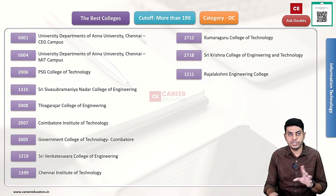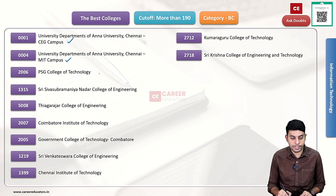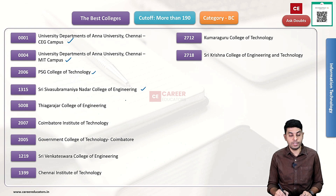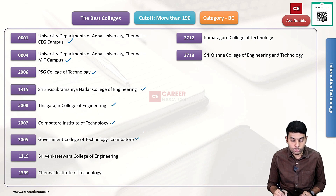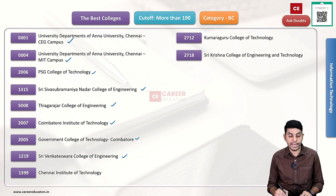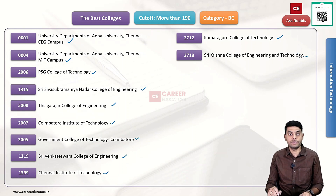Next category we have is BC category: 0001 CEG Campus, 0004 MIT Campus, 2006 PSG College of Technology, 1315 Sri Sivasupramani Nadar College of Engineering, 5008 Thyagarajar College of Engineering, 2007 Koyamathur Institute of Technology, 2005 Government College of Technology, 1219 Sri Venkateshwara College of Engineering, Chennai Institute of Technology, 2712 Kumarakuru College of Technology, 2718 Sri Krishna College of Engineering.